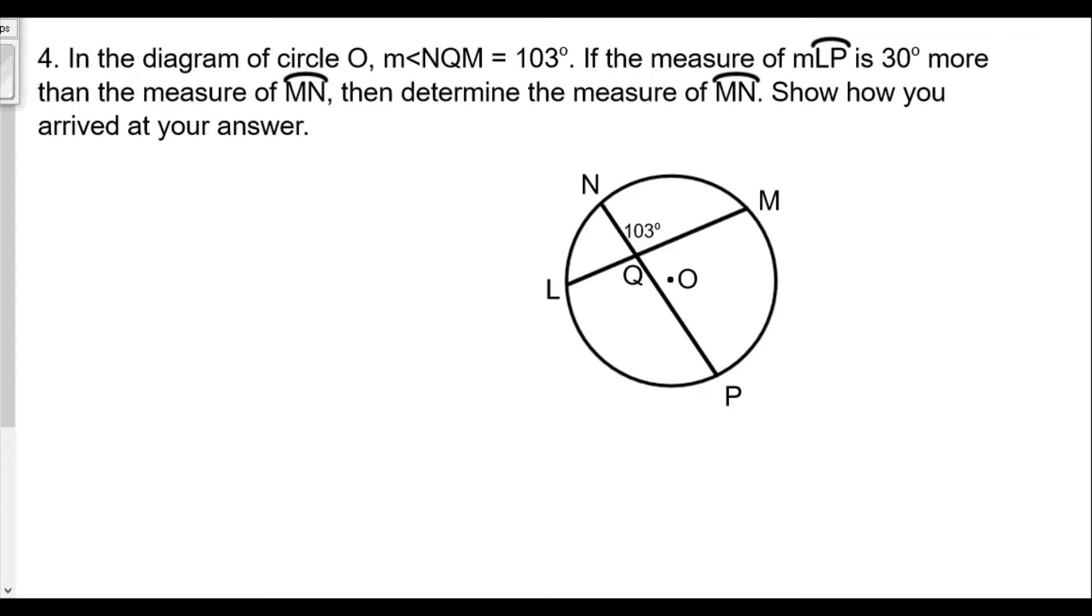If the measure of arc LP is 30 more than the measure of arc MN, then determine the measure of arc MN. Show how you arrived at your answer. It's very important to read our questions carefully.